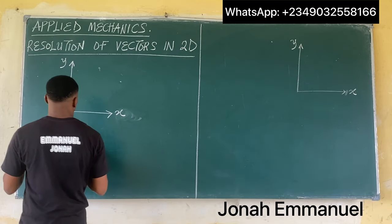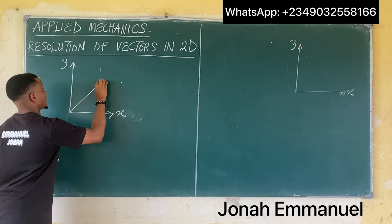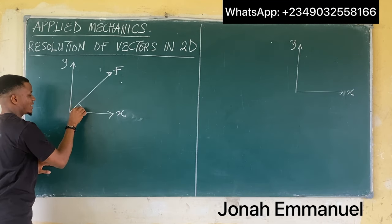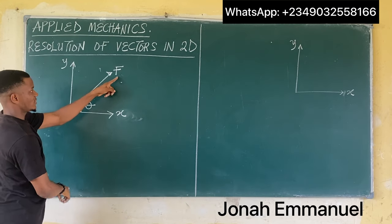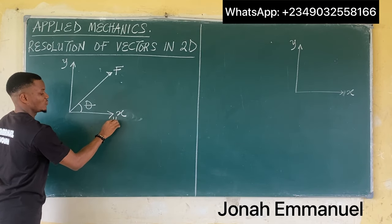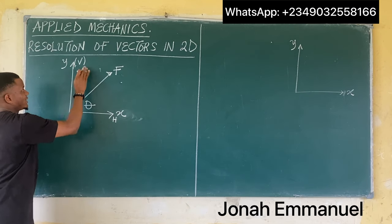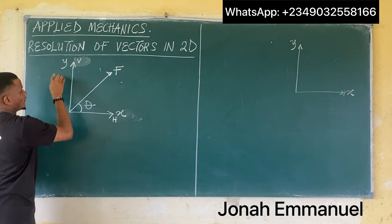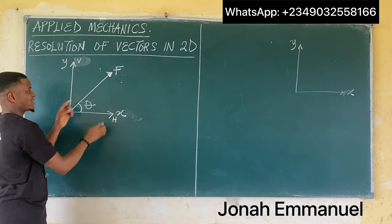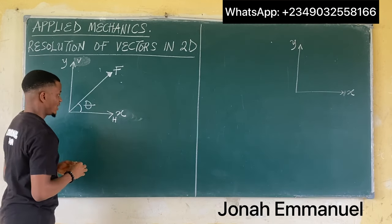So let's say we have a force acting like this. This is my force, and we have an angle here — we call this angle theta. So this force is inclined at an angle theta to the horizontal. Here's my horizontal line H, which is the X direction. Here's my vertical line V, which is the Y direction. If I want to resolve this particular force into its horizontal component and vertical component, what do I do?